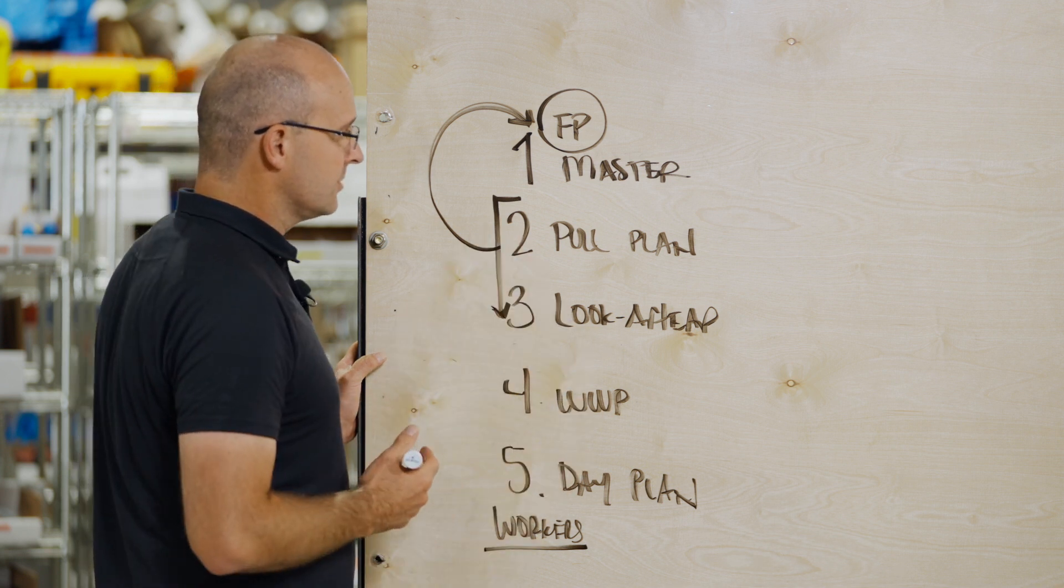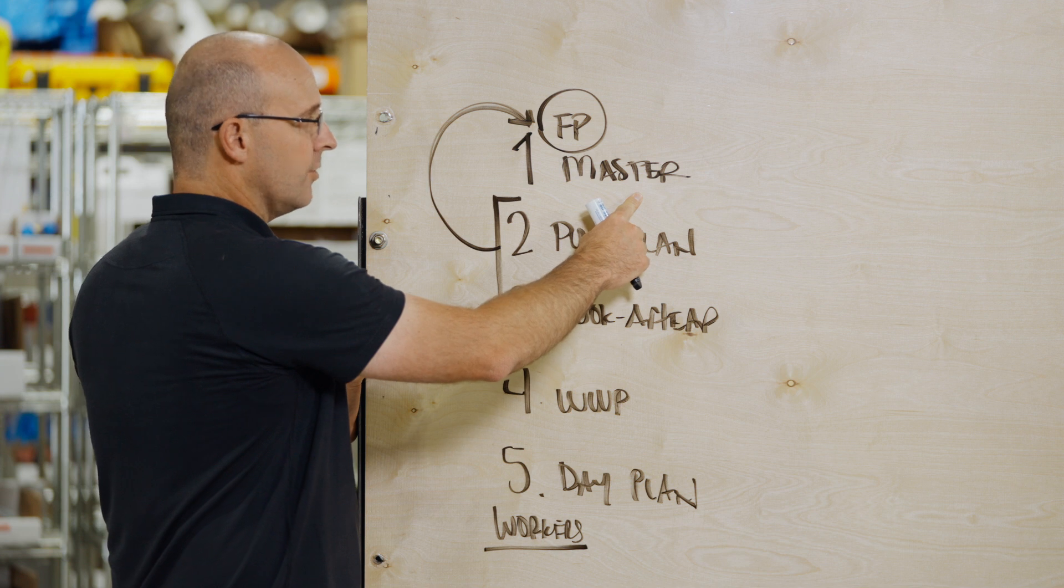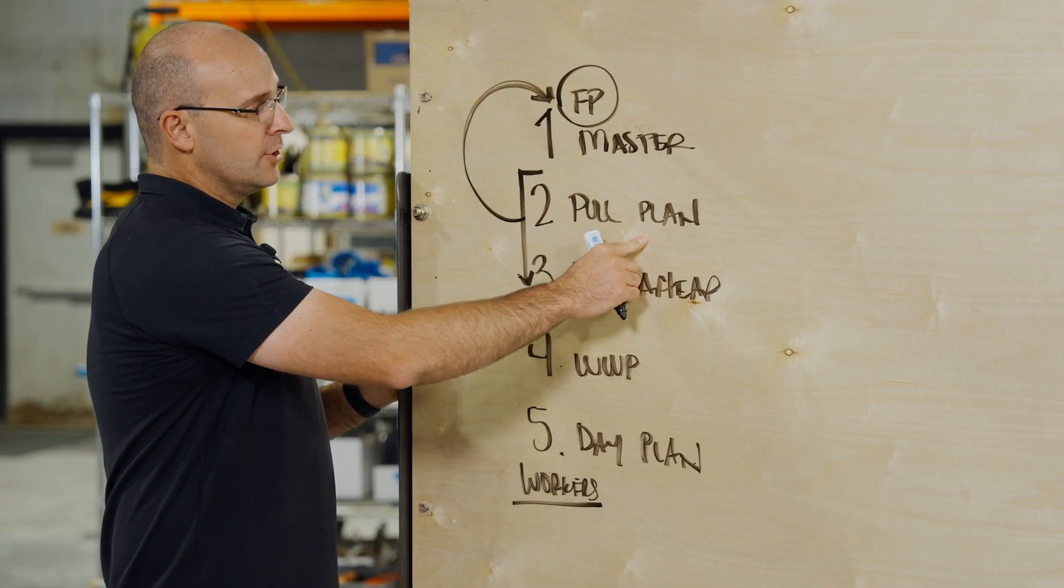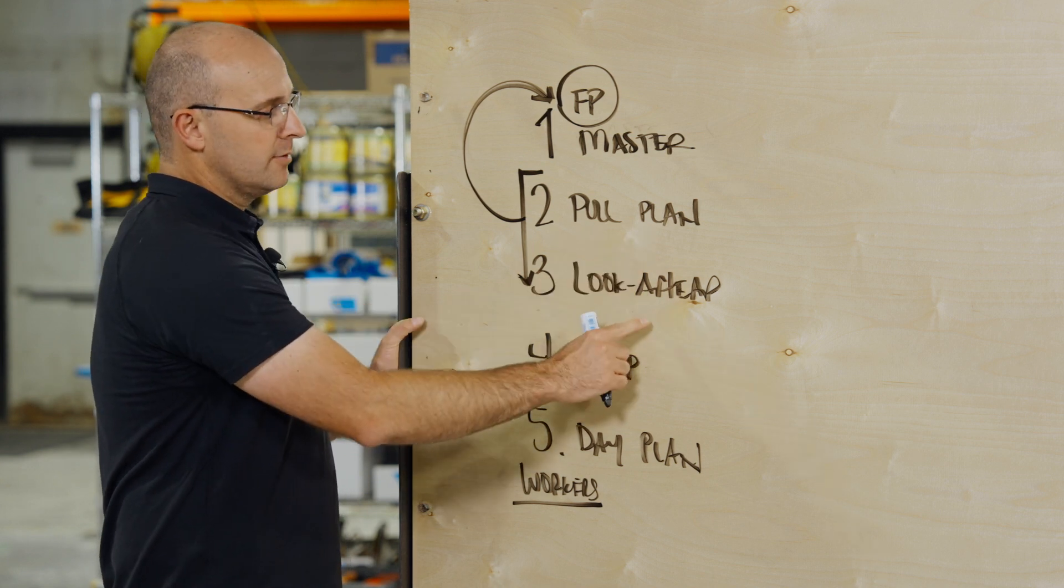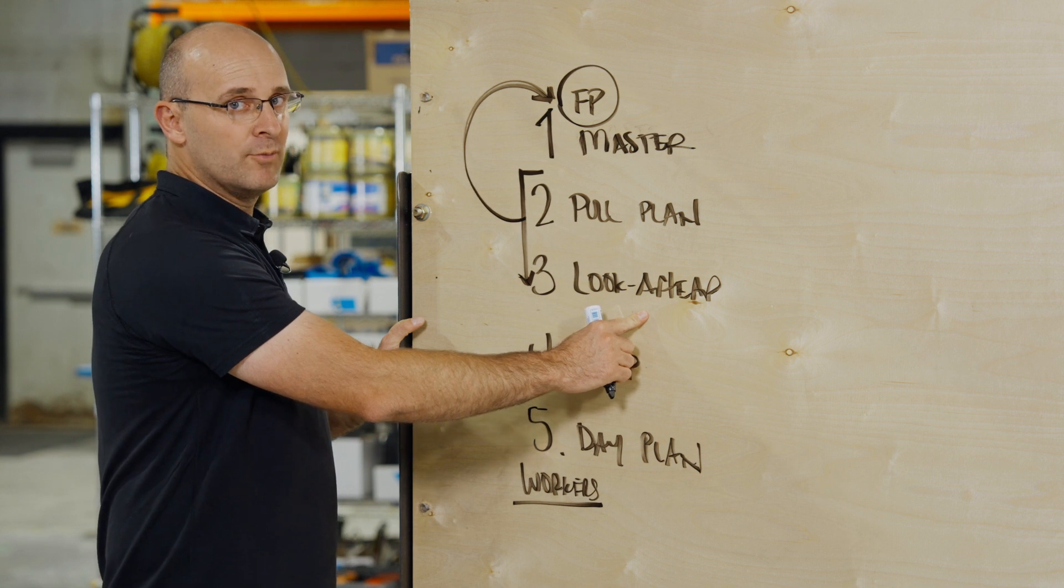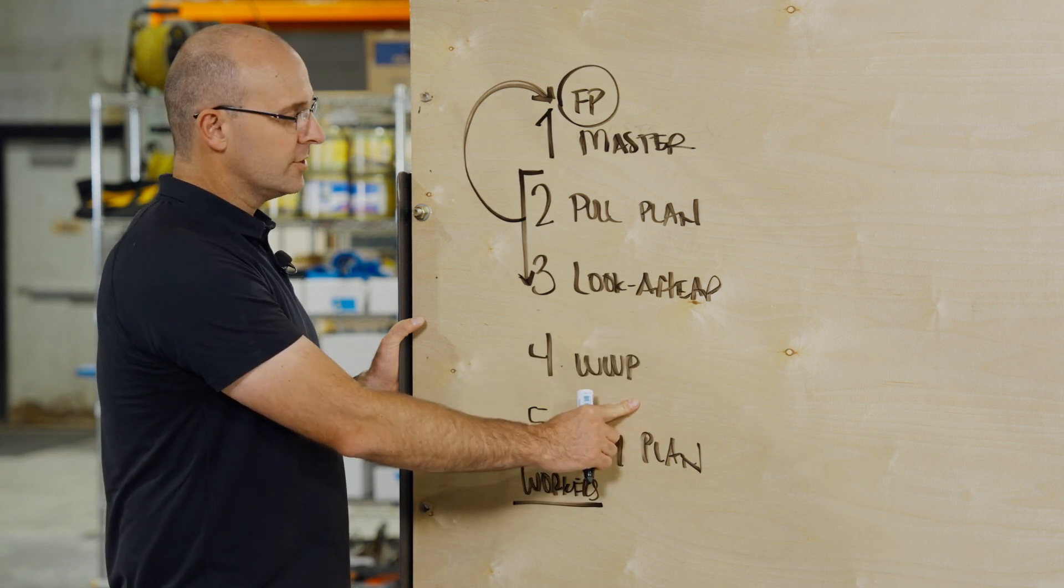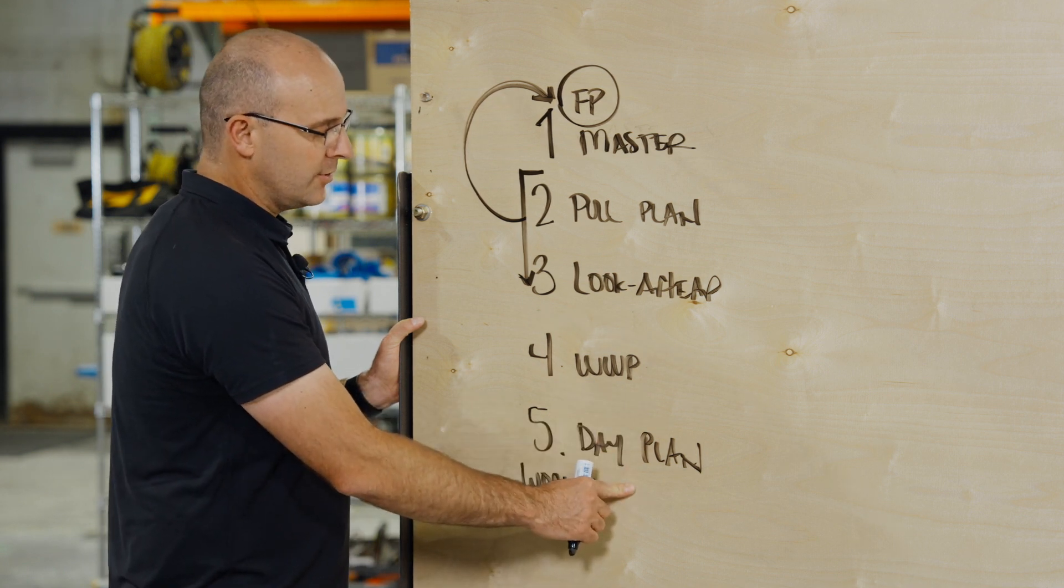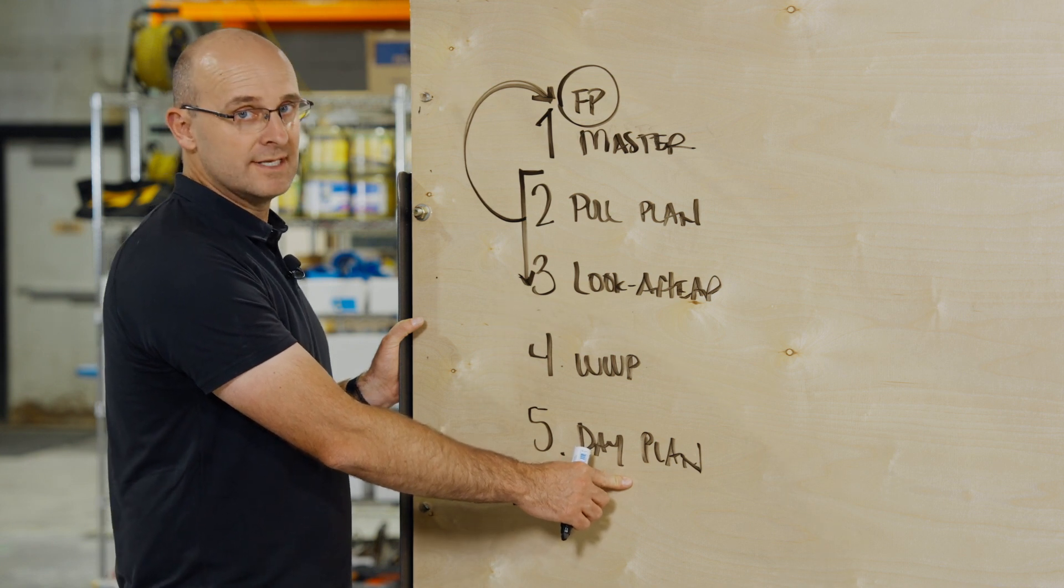So these are the schedule deliverables. Number one, a master schedule is for your milestones and your overall duration. Number two, your pull plan is for your sequence and to get a collaborative plan. Number three, your look ahead is to make work ready and remove roadblocks. Number four, your weekly work plan is for your trades to collaborate and commit. And your day plan is to communicate to everyone on the project site what the plan for the day is.